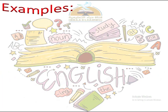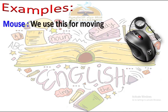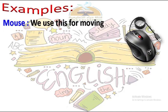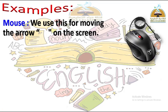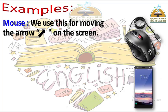Mouse - الفقرة. We use this for moving the arrow on the screen. يعني هي عبارة عن جهاز من الكمبيوتر بنستخدمه علشان نحرك السهم على شاشة الكمبيوتر.